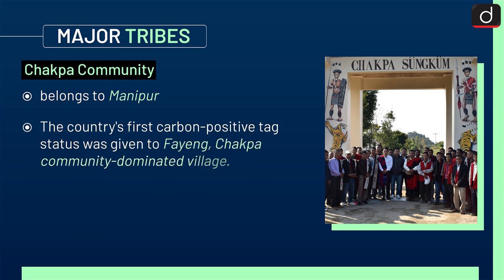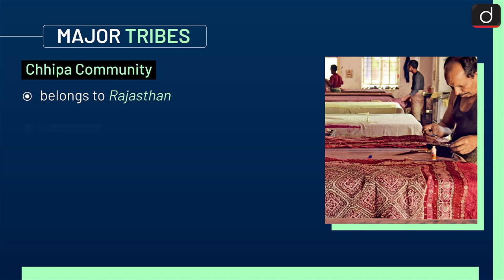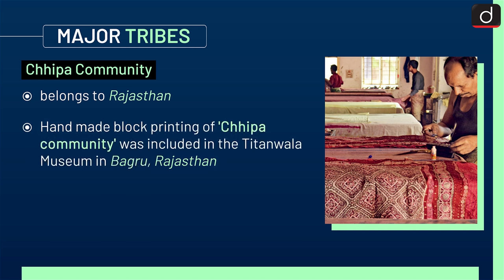Next is the Chakpa community. This community belongs to Manipur. The country's first carbon-positive tax status was given to Faiyeng, a Chakpa community-dominated village. Handmade block-printing of the Chakpa community was included in the Titanwala Museum in Baguru, Rajasthan.